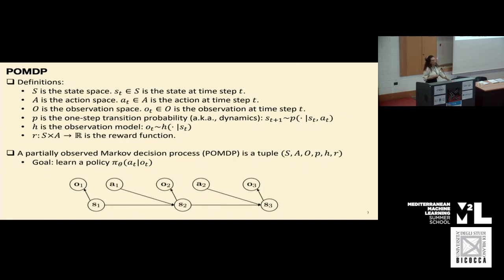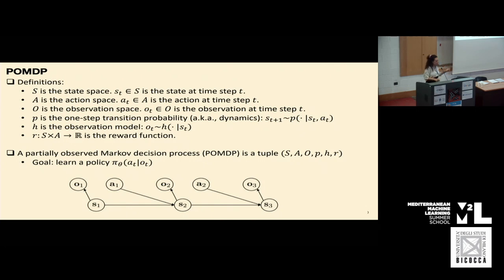In robotics, we are usually dealing with POMDPs, where the observations and observation model come in. We only observe parts of the environment and need to infer the state. There are different techniques to handle this — for example, filtering techniques like particle filtering that give you a belief about the state, or simply adding history into your neural network policy to allow the network to understand what is happening in the past in order to infer the future action.